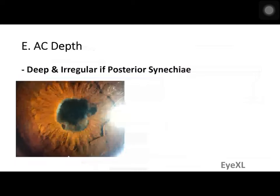Examination of the anterior chamber depth: the depth will be deep and irregular if posterior synechiae are present. The chamber appears irregular only in cases of incomplete synechiae — posterior synechiae being adhesions between the iris and the lens. If there is an almost 360-degree posterior synechia, the anterior chamber will be uniformly deep throughout. This is how you begin to identify whether posterior synechiae are present.